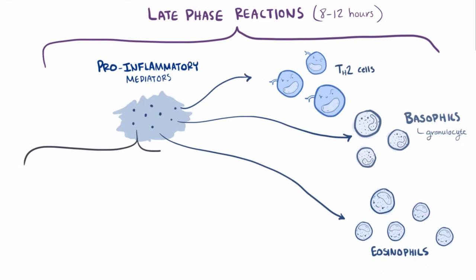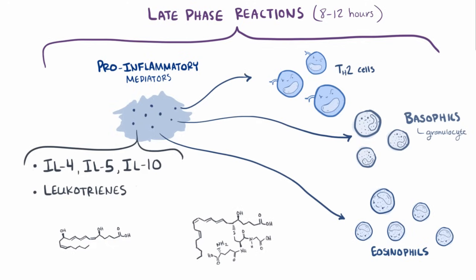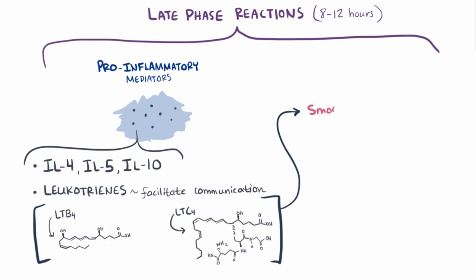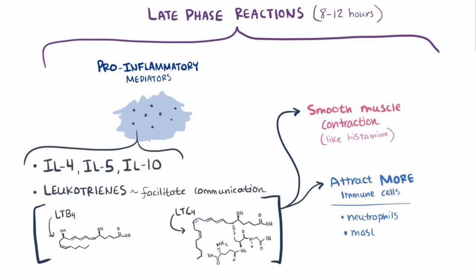These include some of those same interleukins again, interleukin 4, interleukin 5, and interleukin 10, but also leukotrienes, which are smaller molecules made out of fatty acids and facilitate communication between a local group of cells. Two leukotrienes in particular, LTB4 and LTC4, can not only cause smooth muscle contraction and damage to the epithelium, like histamine, but they can attract immune cells, like neutrophils, mast cells, and eosinophils, to their location even after the allergen is long gone.